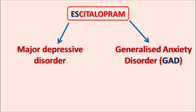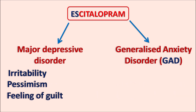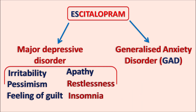Major depressive disorder is associated with depressive symptoms such as irritability, pessimism, feeling of guilt, apathy, lack of initiation, restlessness, insomnia, and lack of sleep. Both psychological and biological symptoms are present in major depressive disorder. Escitalopram can be used in both adults and adolescents.